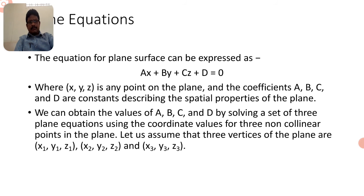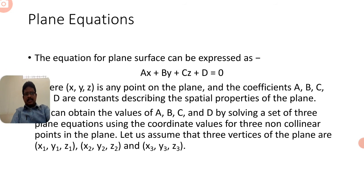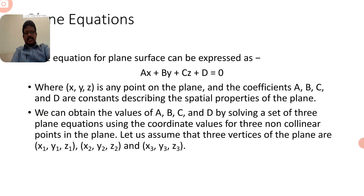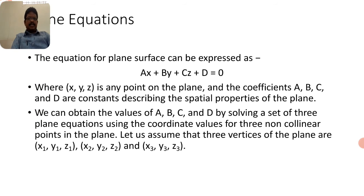Coming to the plane equation — the general equation of a plane is Ax + By + Cz + D = 0, where x, y, z is a point on the plane and the coefficients A, B, C, D are constants describing the spatial properties of the plane.